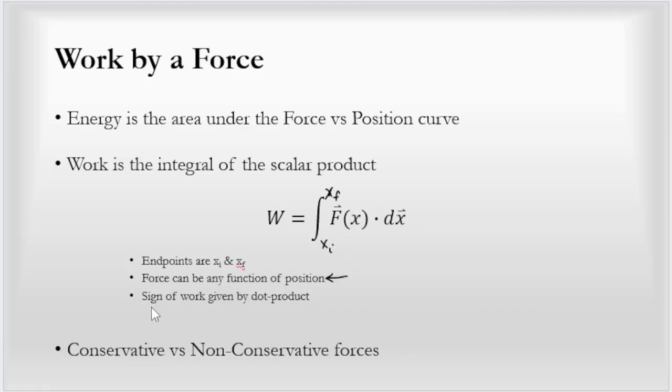I'm going to remind you the sign of the work is given by the dot product. If the displacement and the force are in the same direction, you get positive work, as opposed to if you're moving in some direction and the force opposes that displacement. You're going to end up with a minus, a relative minus sign, and the work done by this force would be negative.